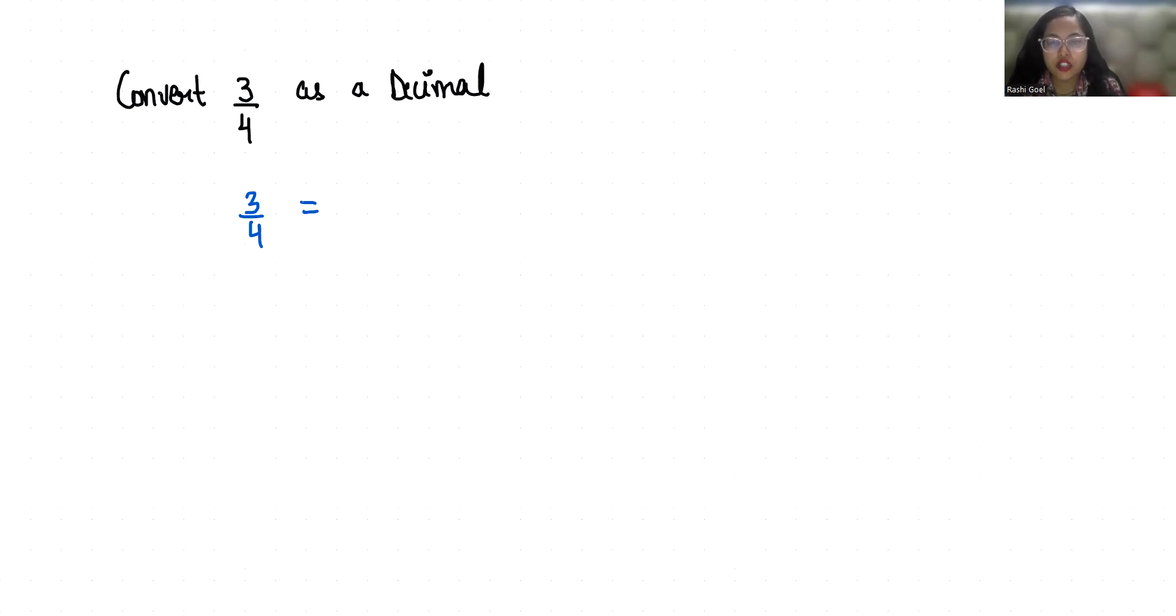So to convert any fraction into decimal, the first step is to divide the numerator with denominator. So 4 cannot be divisible by 3. So we will take decimal and write 0 here.